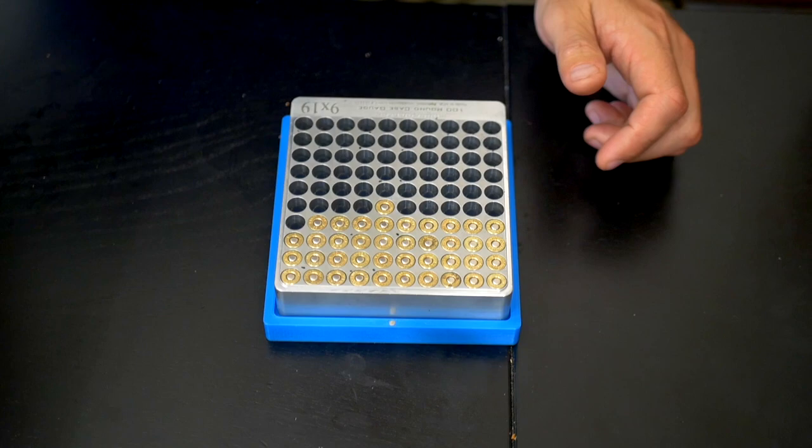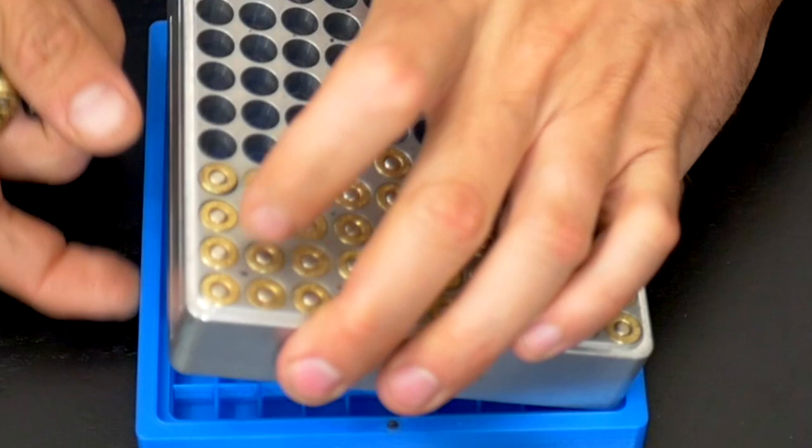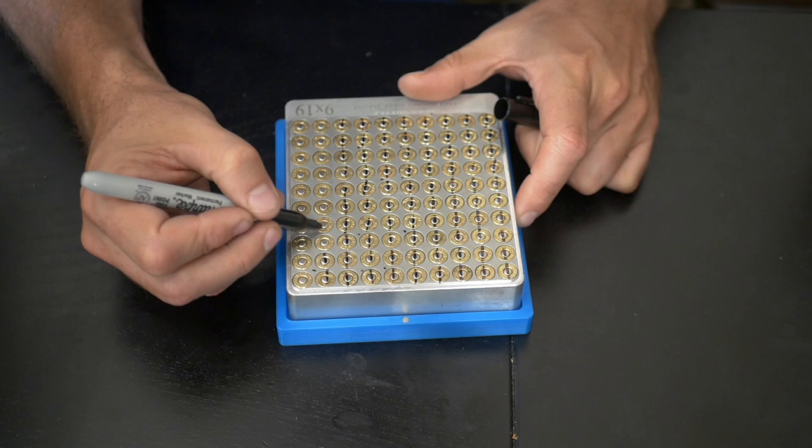A bonus QC tip is to verify all primers are flush or below flush. Use a permanent marker to mark each piece of brass across the base of the primer. It'll make you look hard at each round and make sure the primer is seated fully.